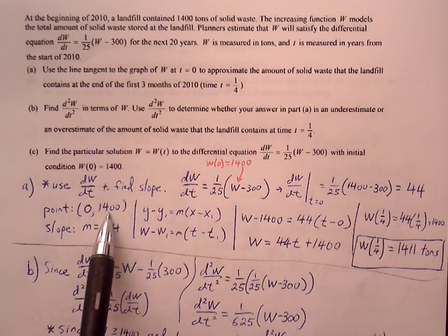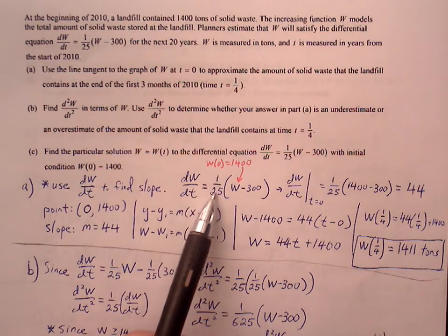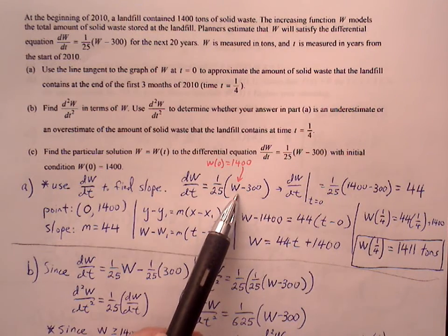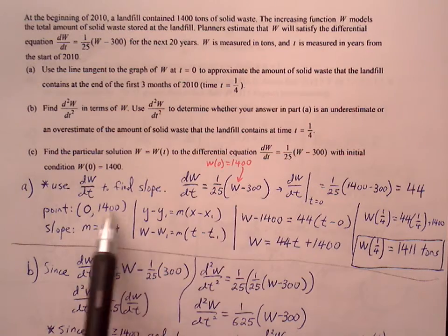And then we're going to use this to find our slope. Our dW/dt requires the amount of waste at time t equals zero. So the amount of waste at time t equals zero is 1400 tons. Plug 1400 in for W.